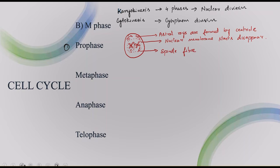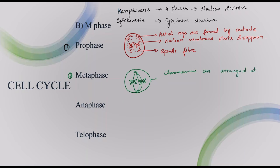Now let us enter into metaphase. In metaphase, the centriole is present and the chromosomes are arranged at the equator — also called the metaphase plate. All the chromosomes will be in the equator region which is at the center.